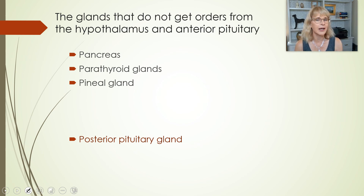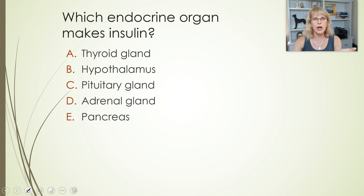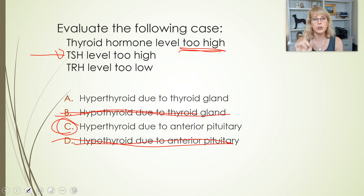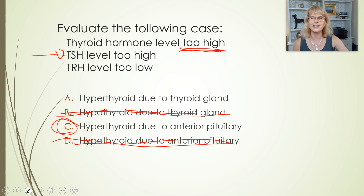Before I sign off — make sure that you know these stories we went over, not just for thyroid hormone but also for cortisol. The question could be: a patient's cortisol levels are too high, their CRH levels are too low, and their ACTH levels are too high. Make sure you know both sets of stories. We'll cover that in the next video.